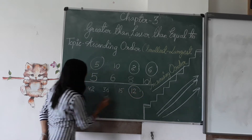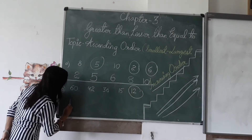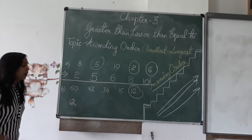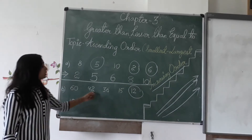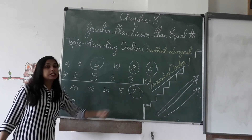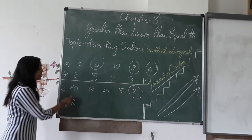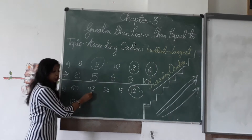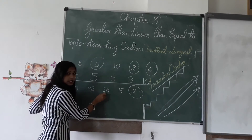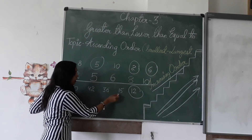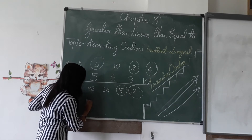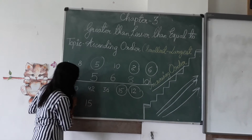The smallest number we will write first — it is forty-two. Now in the remaining numbers, try to find out the smallest number. The next smallest is fifty, so we will write fifty here.